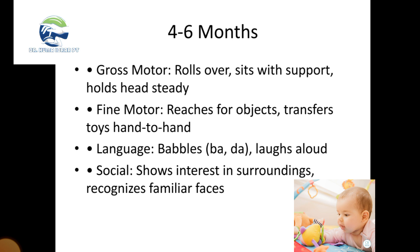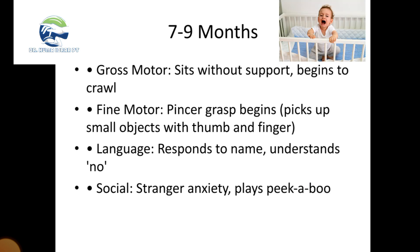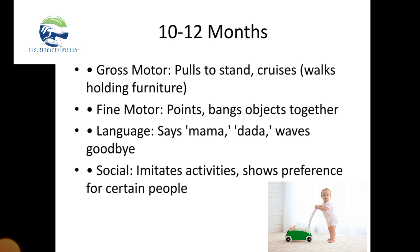Seven to nine months: gross motor includes sits without support and begins to crawl. Fine motor skills include pincer grasp beginning and picks up small objects with thumb and finger. Language skills include responds to name and understands 'no.' Social skills include stranger anxiety, points, bangs objects together, says 'mama' and 'dada,' and waves goodbye.